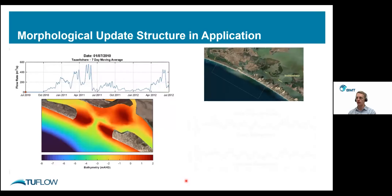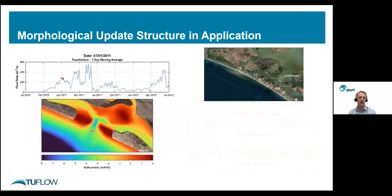Looking at application of the morphological update structure, here we have a time series of flow through Tauwitchere Barrage — one of the major inflow points from the Murray River into the Coorong, located close to the Murray River mouth. In the colour map we have a bird's eye view of the Murray River mouth and the bed elevation. As we progress through, we're getting an increase in flow rate and seeing an increase in depth and widening of that mouth. This affects the conveyance of freshwater flows through the mouth and the tidal fluxes going into the model, affecting water levels particularly further south into the South Lagoon.